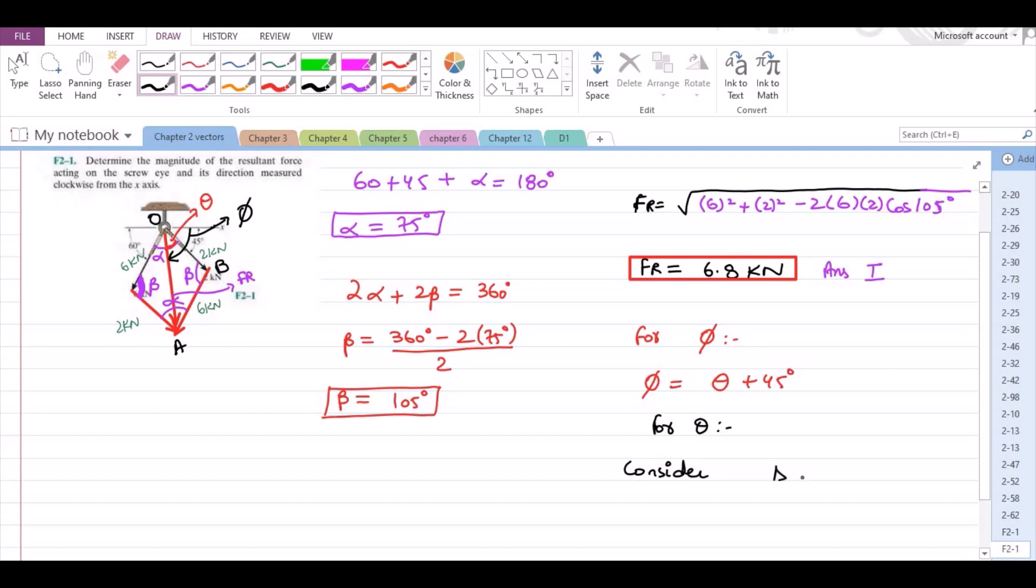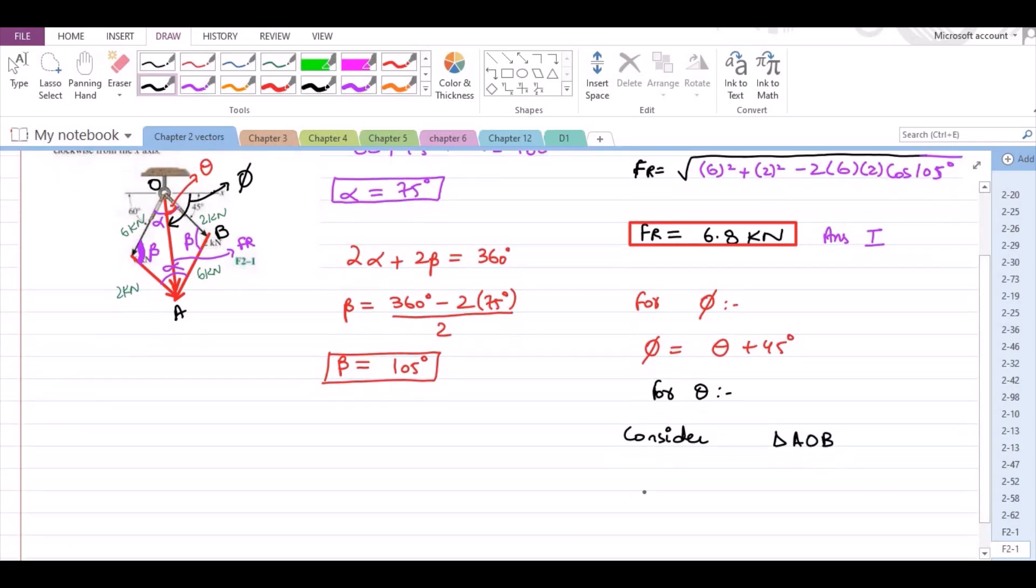Consider triangle A, O and B. So, we could apply the sine law in this triangle. We have sine theta over 6 is equal to sine beta over FR.